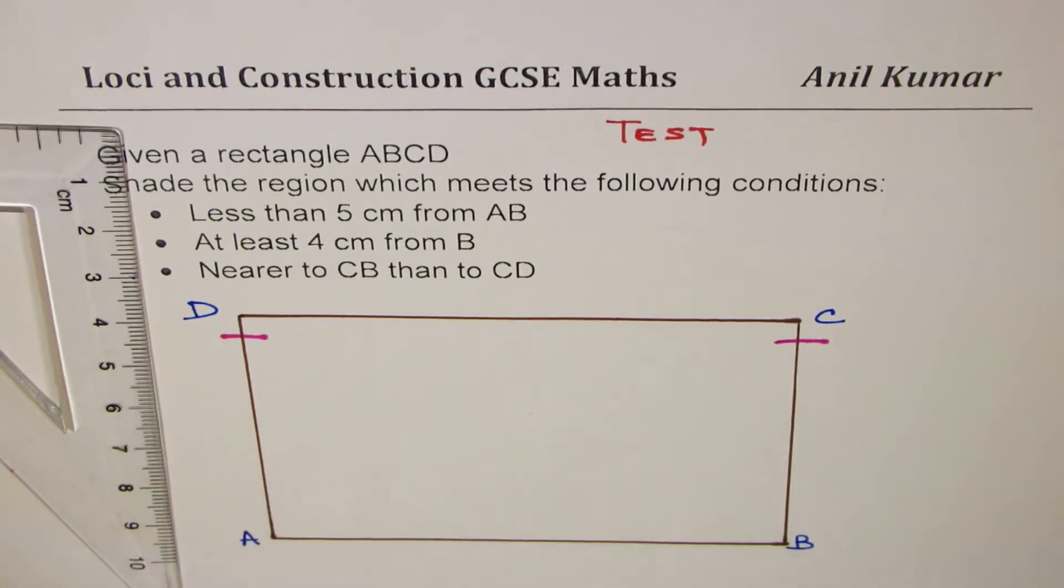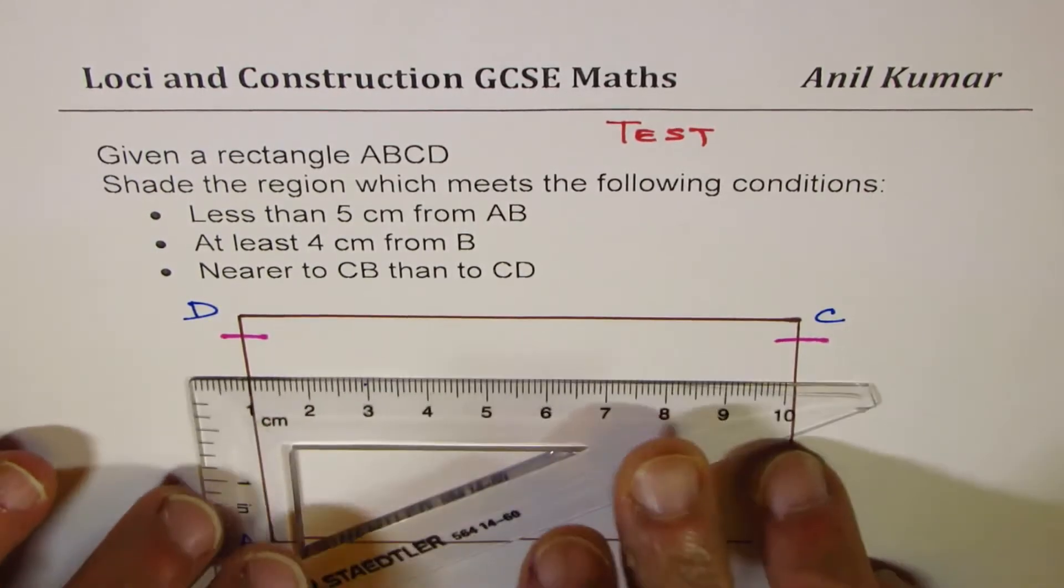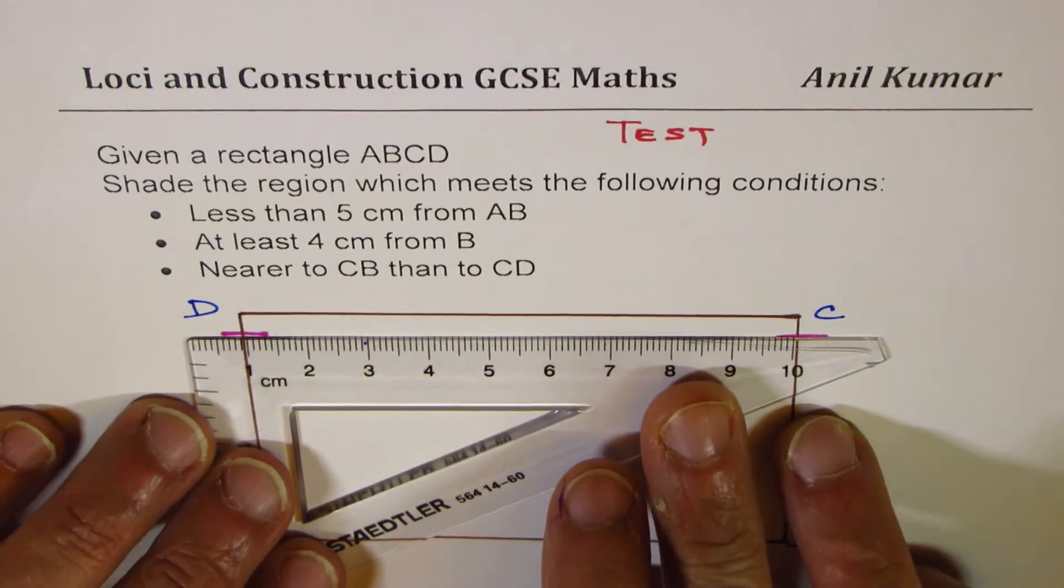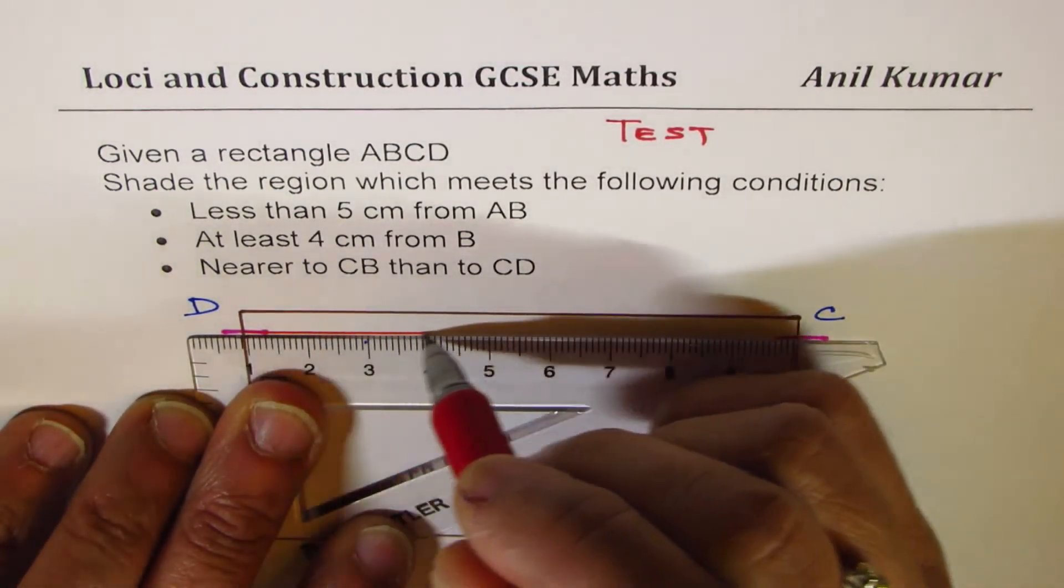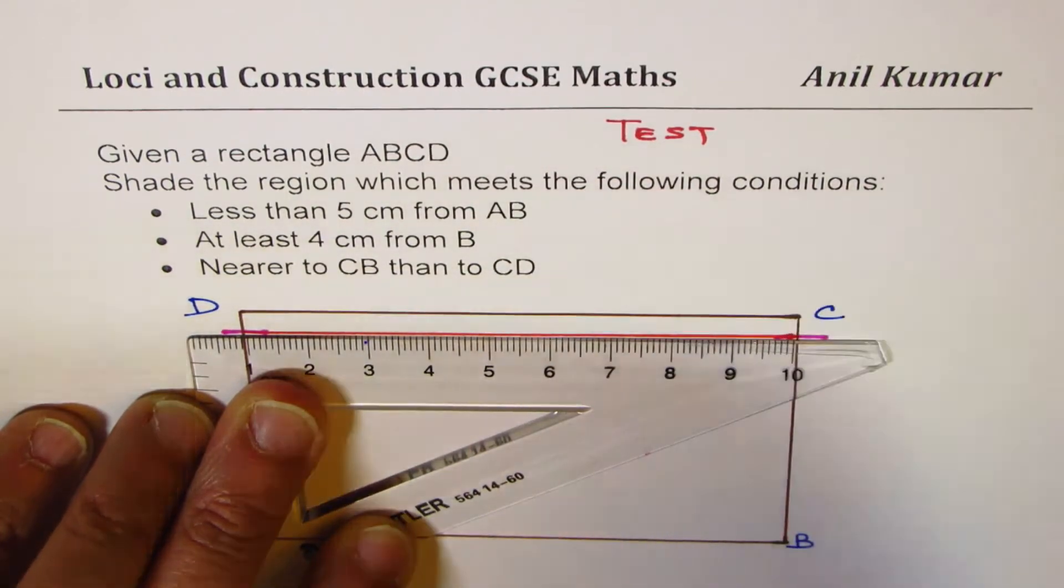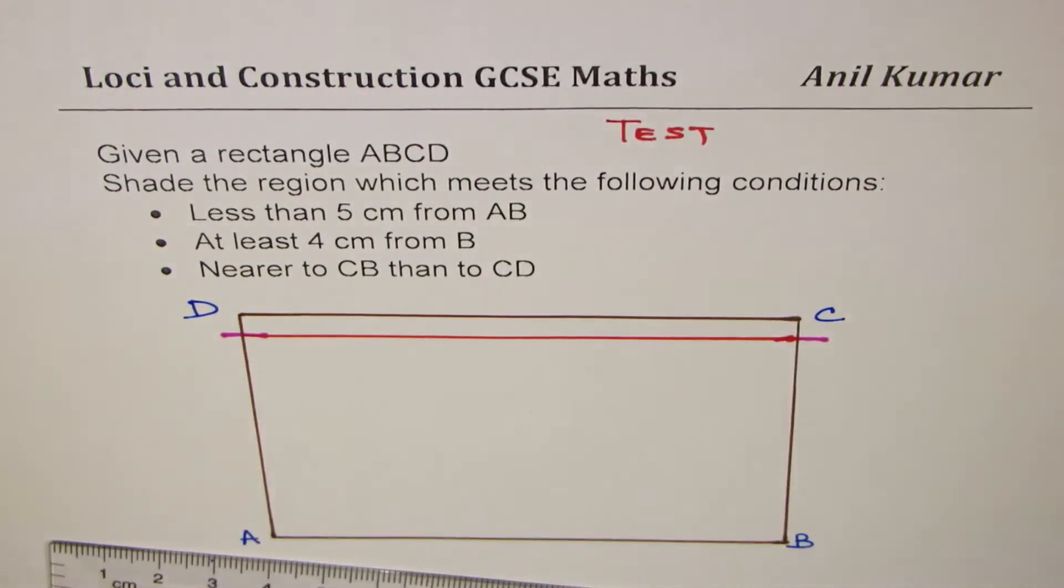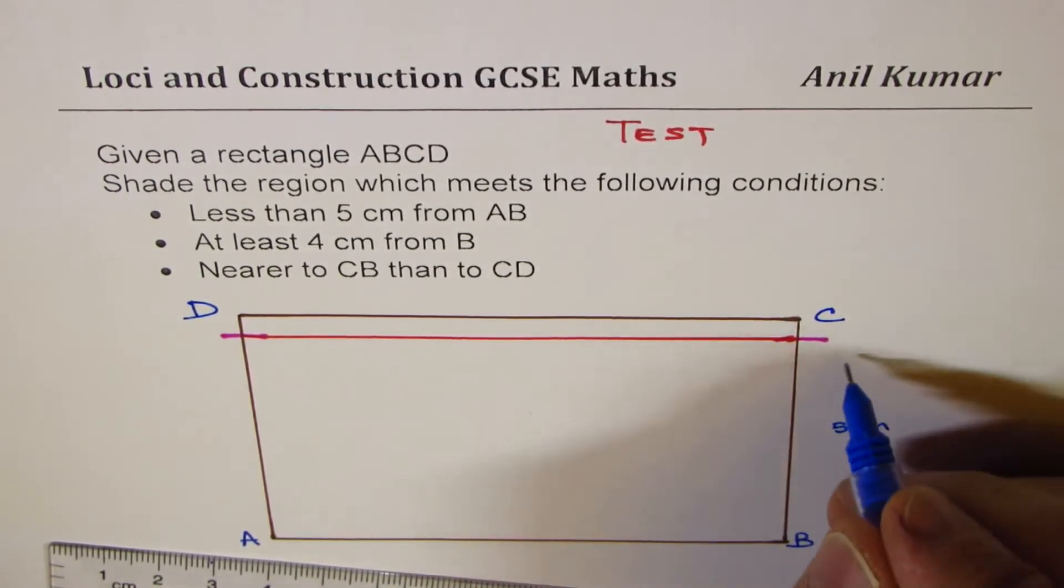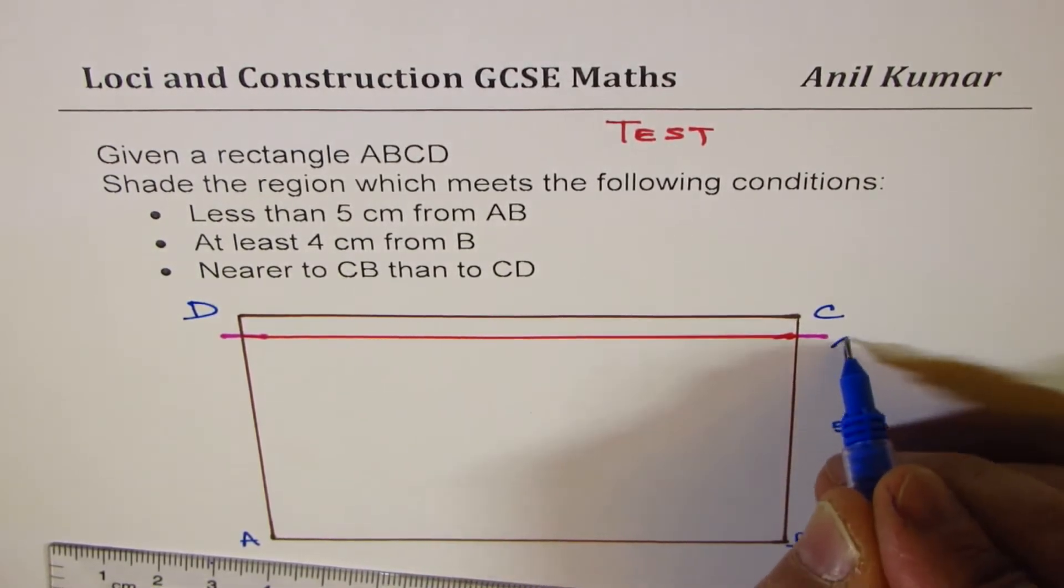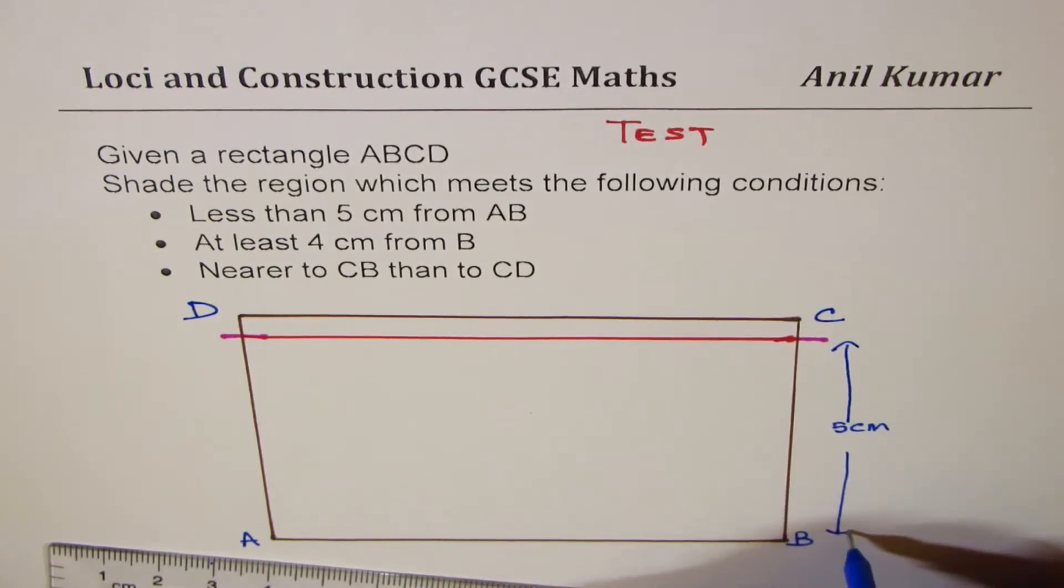So we get two points on our rectangle. We'll just connect them. So that is the first thing. So basically, we have drawn a line parallel to AB, which is 5 cm away. So this length is basically 5 cm. That's the first step.